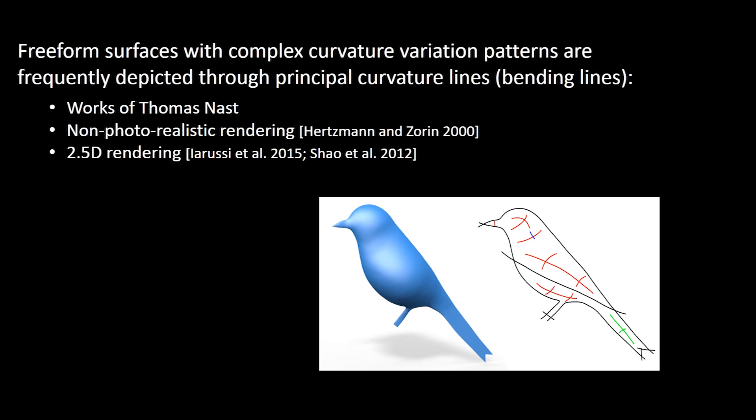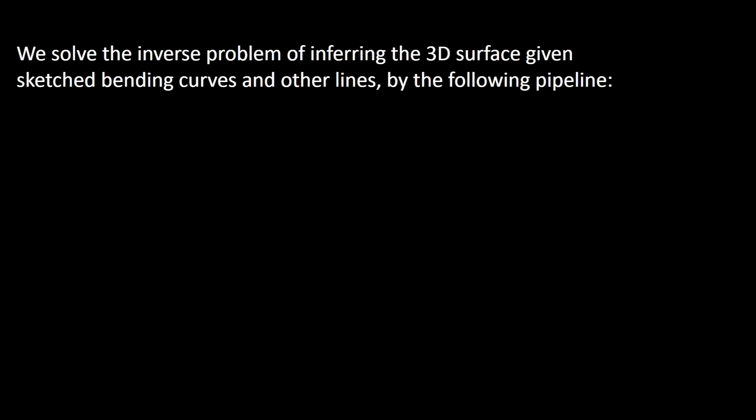Bending lines, which approximate principal curvature lines of a surface mathematically, have been used extensively to depict 3D shapes with complex curvature variations. This inspires us to solve the inverse problem—that is, we use these curves to model freeform shapes with controlled curvature variation patterns.